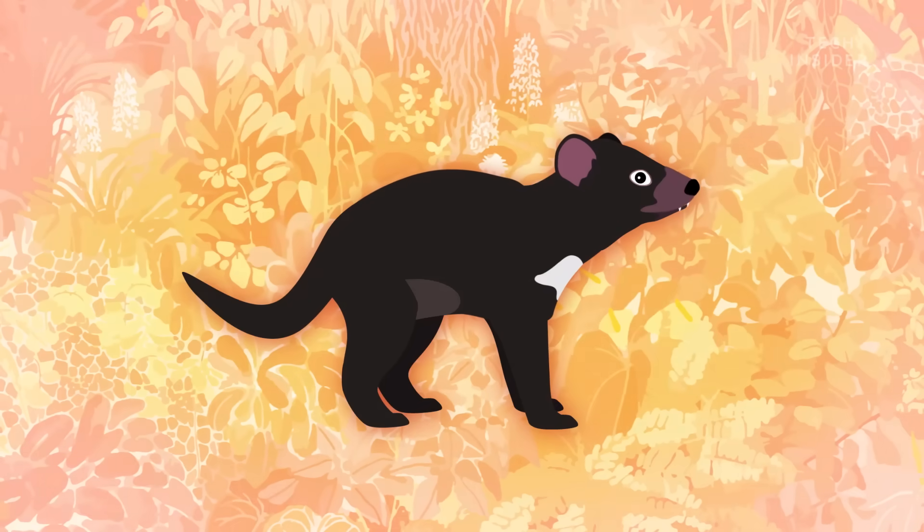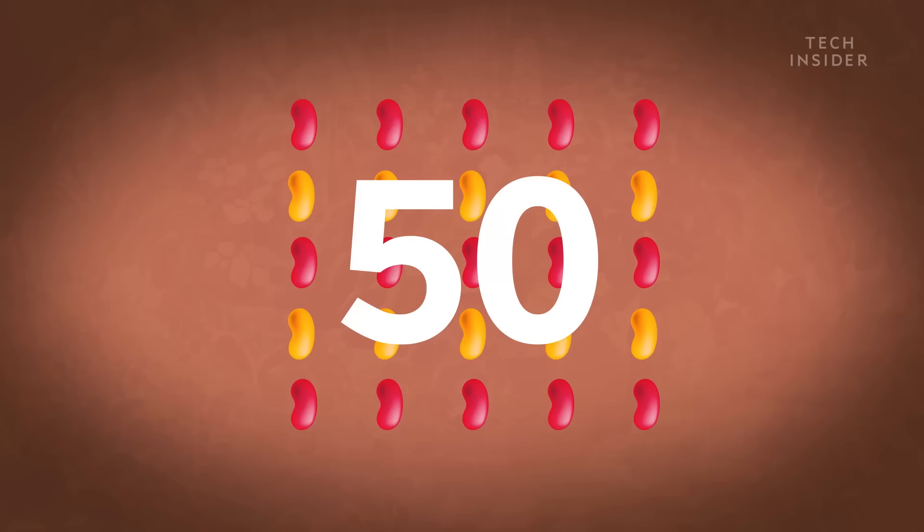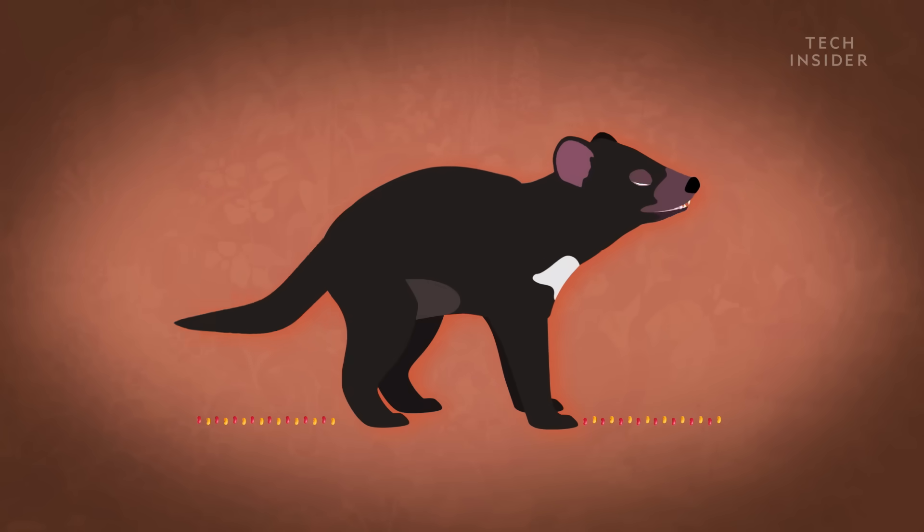Take the Tasmanian devil. The mom gives birth to up to 50 joeys at a time, each the size of a raisin. They have to crawl from the mother's birth canal over her body and into her pouch, where they'll snuggle up for another four months.